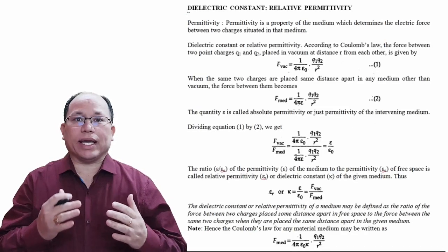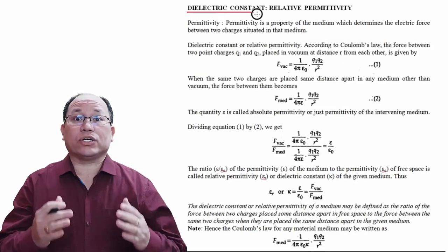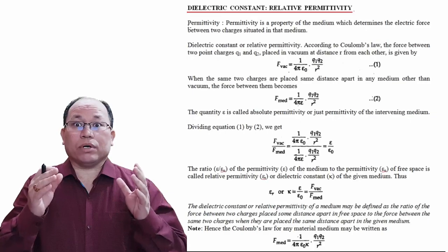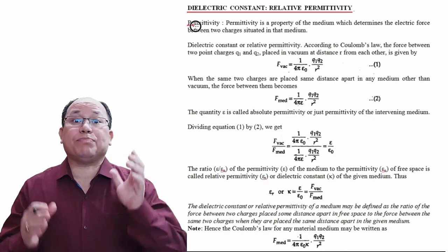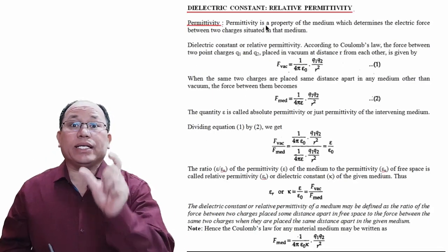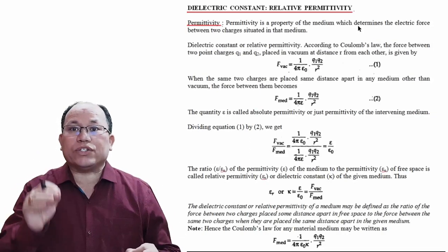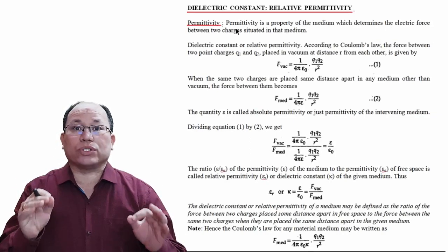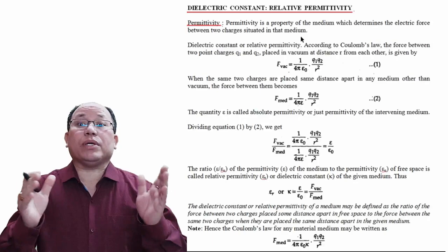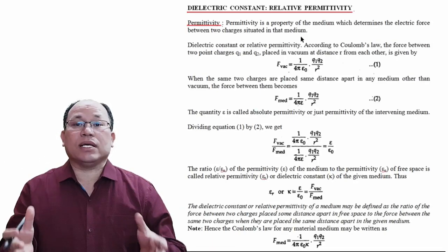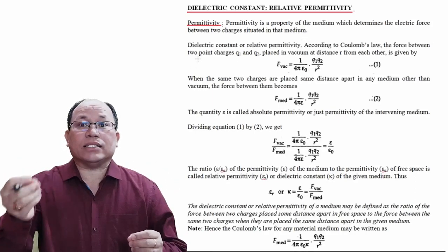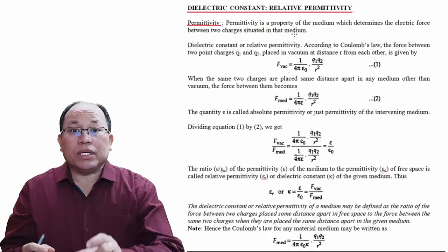Now let's come to the new topic: dielectric constant or relative permittivity. Before coming to this topic, first let us define what is permittivity. Permittivity is a property of the medium which determines the electric force between two charges situated in that medium. For example, different mediums like water, turpentine, and alcohol will have different values of permittivity.